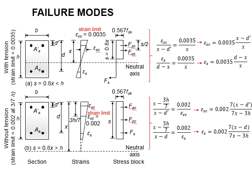In terms of the strength limits, the strength limit for columns undergoing tensions is defined as epsilon_cc = 0.0035. As for columns undergoing compressions, the strength limit happens at the position of 3h/7, with a strength limit epsilon_cc of 0.002.